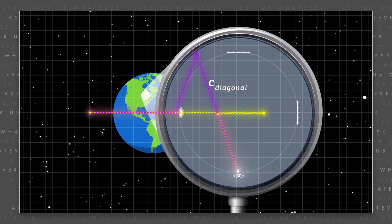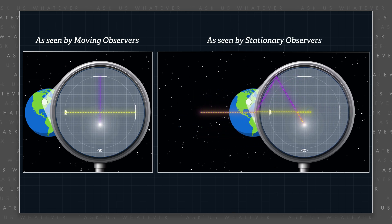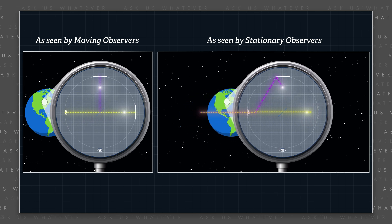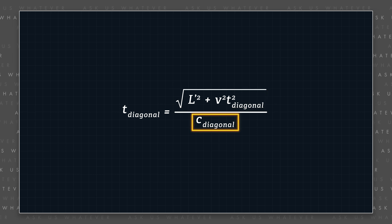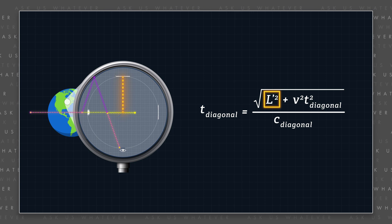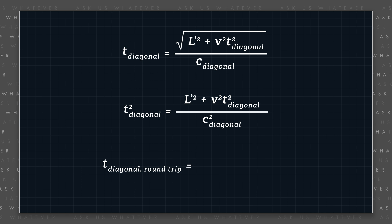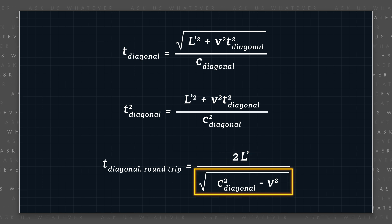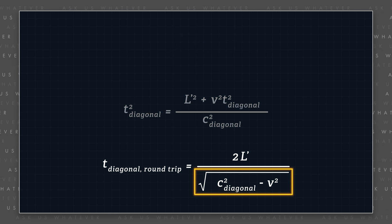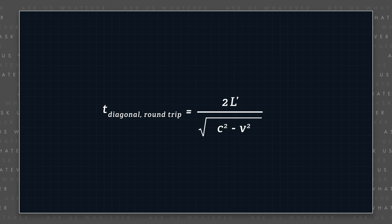We need to know how fast light travels if it is emitted at an angle with respect to the direction of motion of the emitter, as viewed from the stationary frame. Let's call that speed c-diagonal. The Michelson-Morley experiment required the transverse path of light — the path that appears to be 90 degrees from the moving frame — to travel at a diagonal when viewed from the stationary frame. The time to travel the diagonal distance is the diagonal path length divided by c-diagonal. Our alternative model provides for the possibility of speeds other than c, so let's solve for c-diagonal.